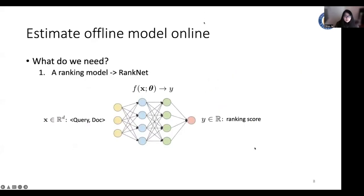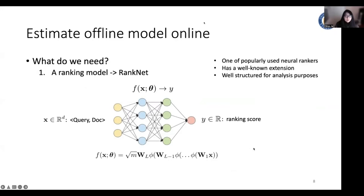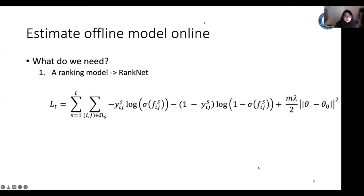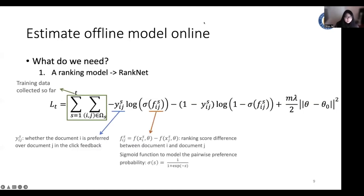First, we adopt a RankNet as the neural ranker, which is one of the most popularly used models. And we use a multi-layer perception structure for the neural network, where M and L are the width and the depth of the neural network. Here is the loss function for learning the neural ranker at a timestamp T. So we use all the data collected so far to train the model. And we use this cross-entropy loss between the estimated pairwise preference and the observed pairwise preference.